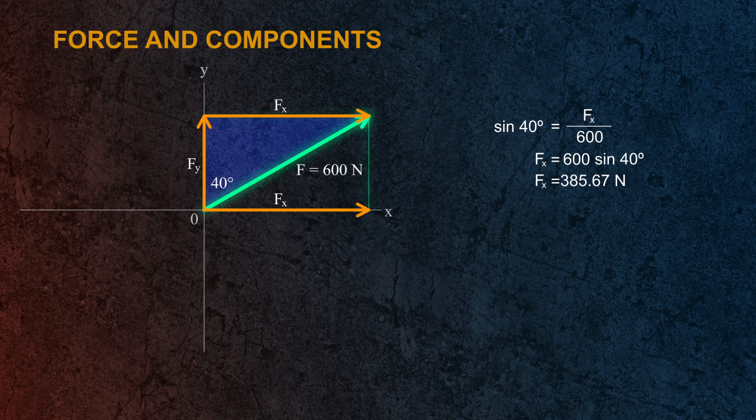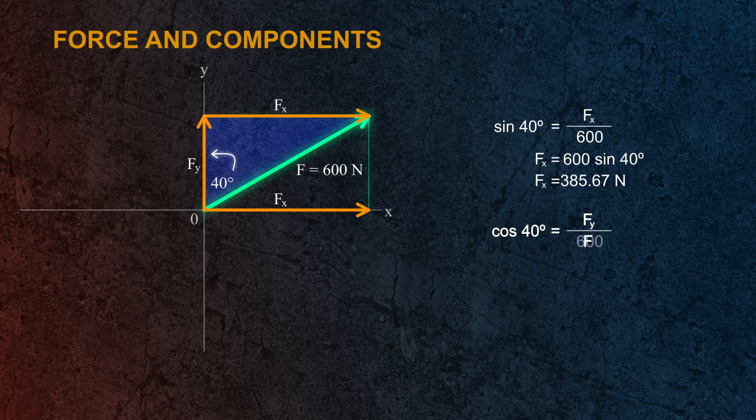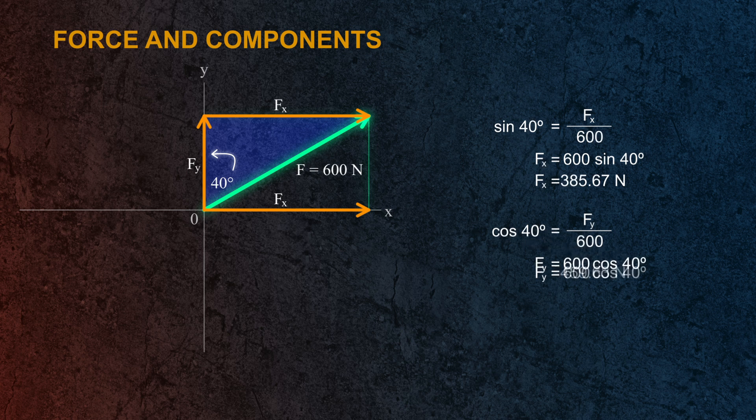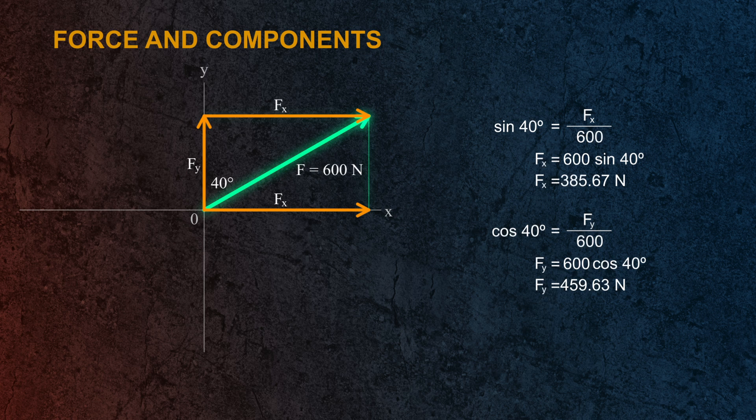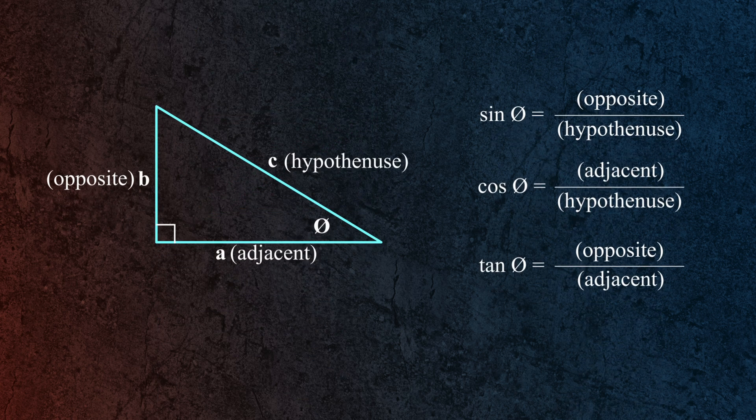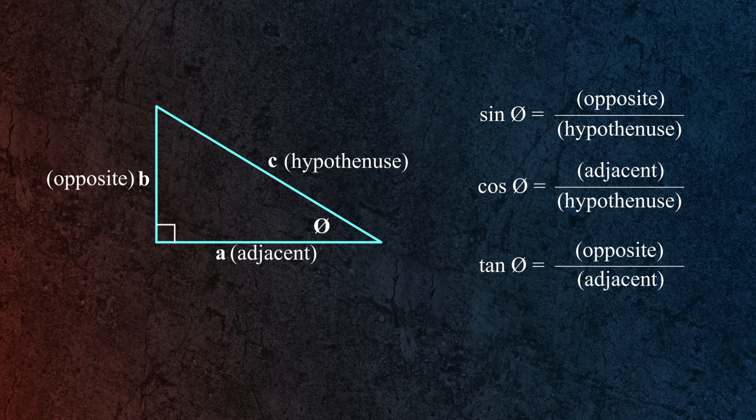And for the y component, it is now adjacent to the given angle. So therefore, the cosine of 40 degrees is equal to Fy divided by 600 newtons. So Fy is equal to 459.6 newtons. So always go back to the solution of a right triangle. It is much better than simply memorizing formulas for each problem.